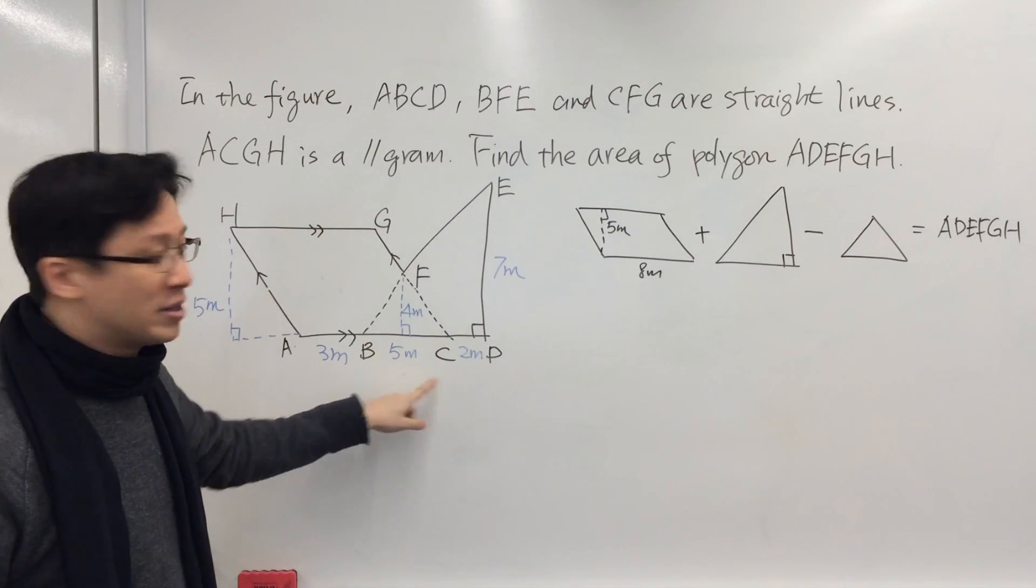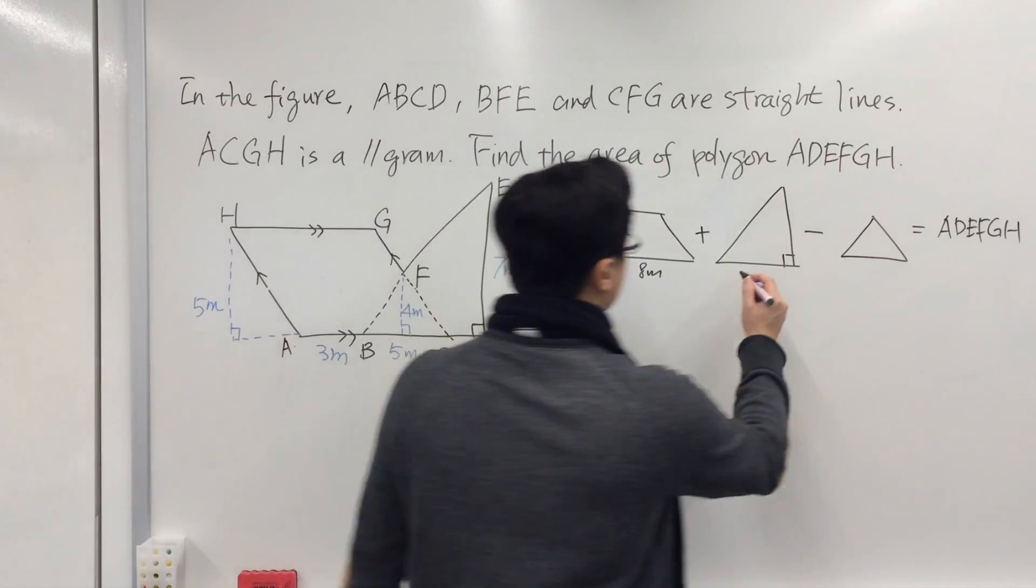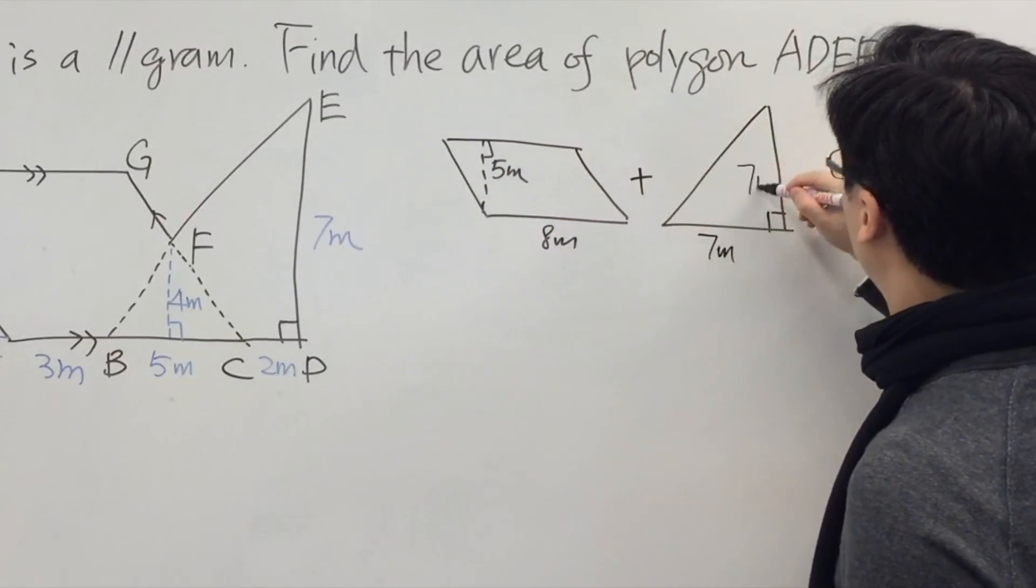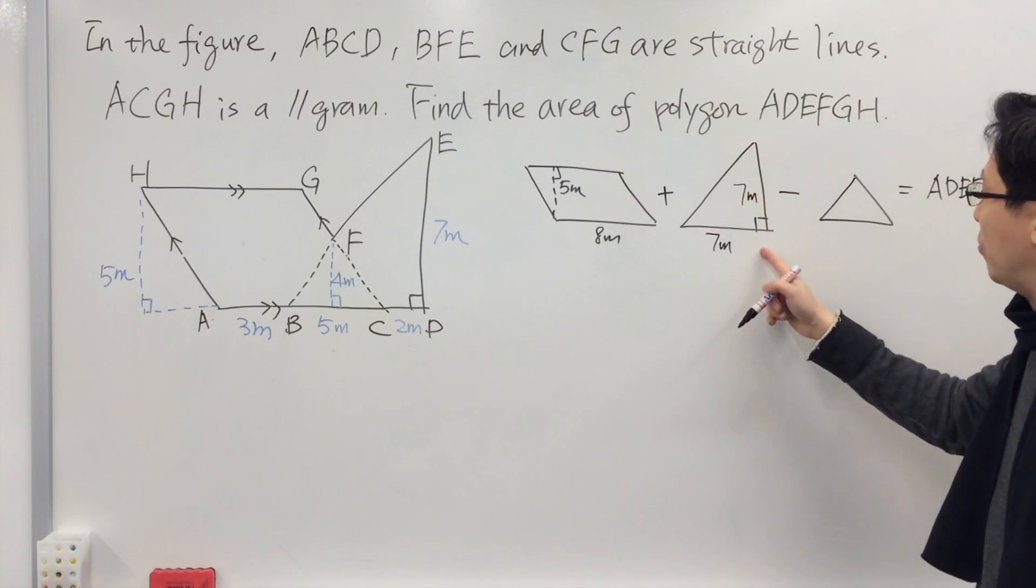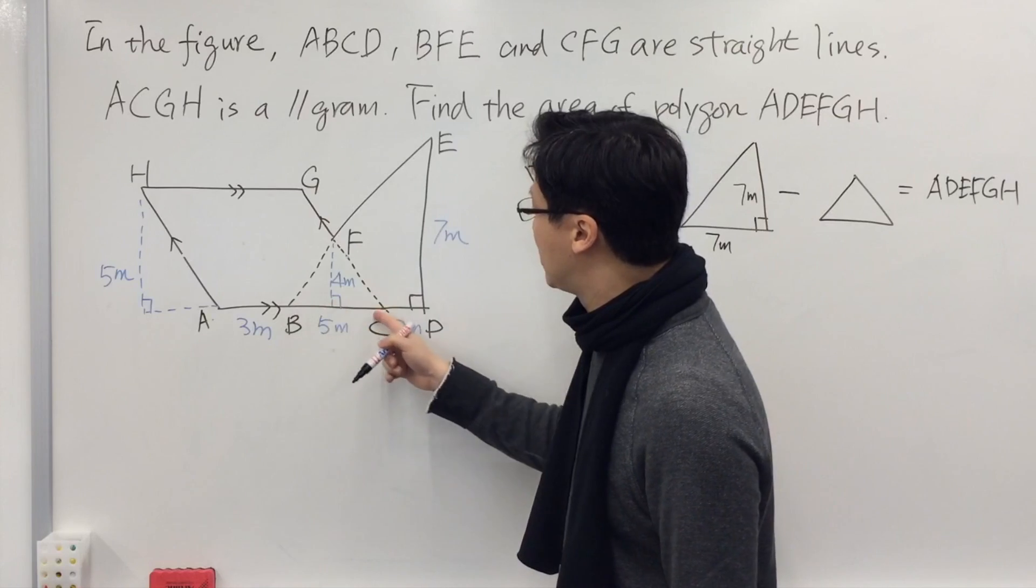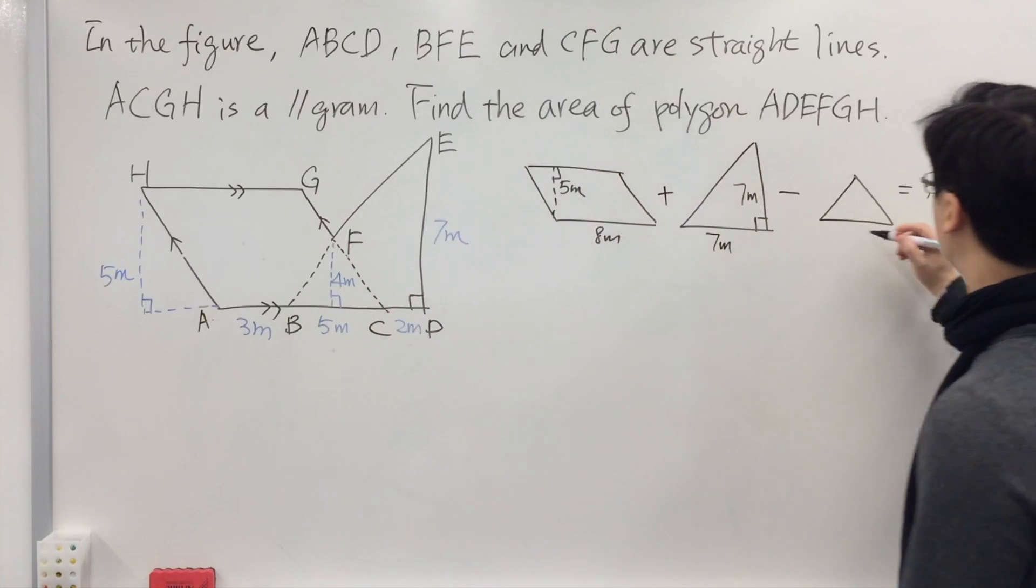For triangle BDE, 5 meters plus 2 meters is the base, so we have 7 meters. Height is 7 meters. This is a right angle triangle. Finally, the overlapping part BCF has a base of 5 meters.